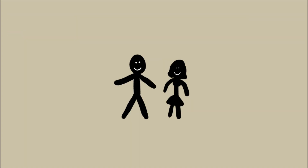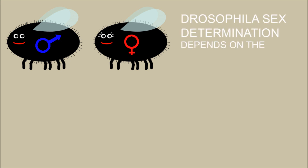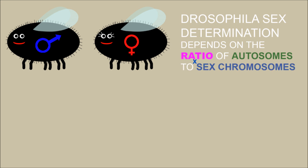In humans, sex depends on whether you have an X and a Y chromosome. However, in Drosophila, something far more interesting happens. In Drosophila, sex determination depends on the ratio of autosomes, or non-sex chromosomes, to the number of X sex chromosomes.